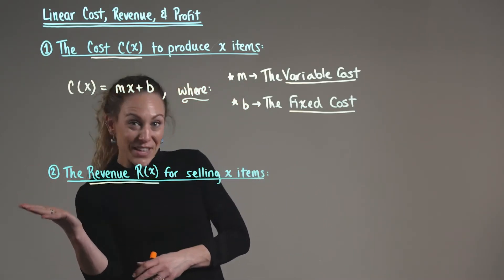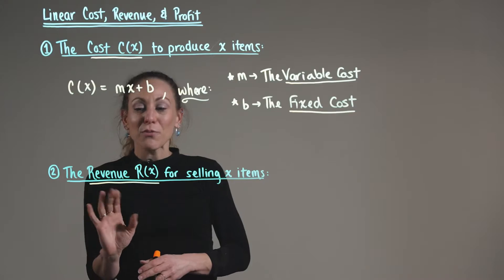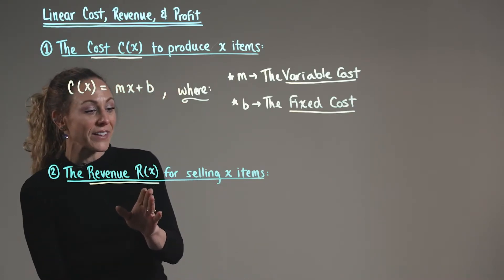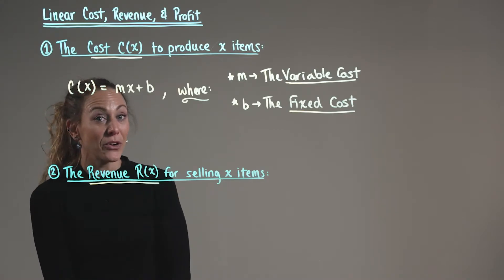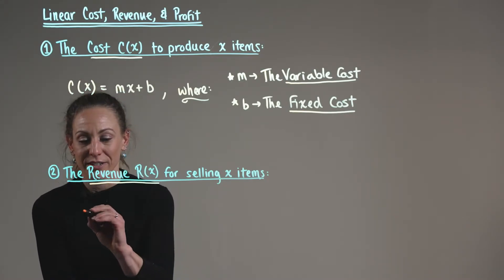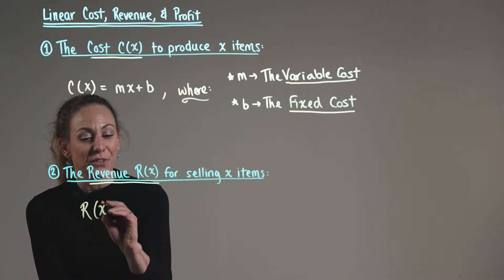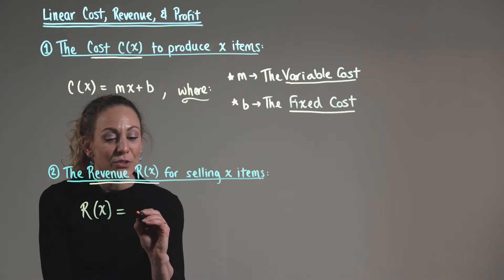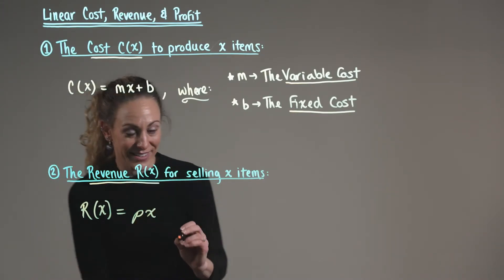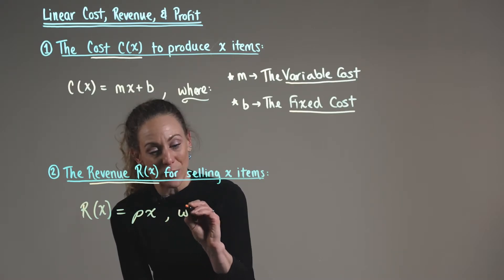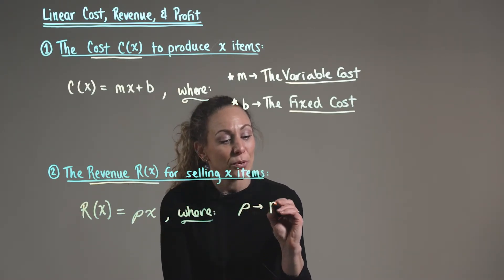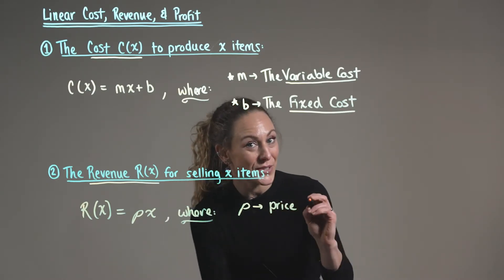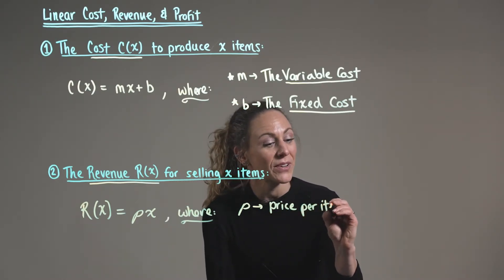The next idea is that we have a revenue function, R(x), for selling x items. Our revenue function can be modeled using the following linear equation: R(x) for revenue is equal to p times x, where p represents the price per unit sold, or price per item.